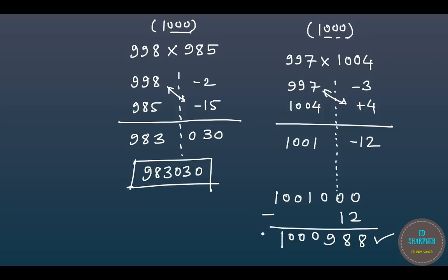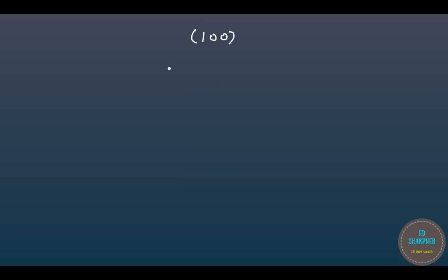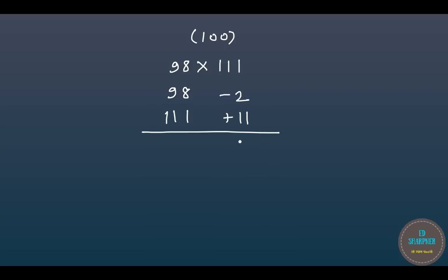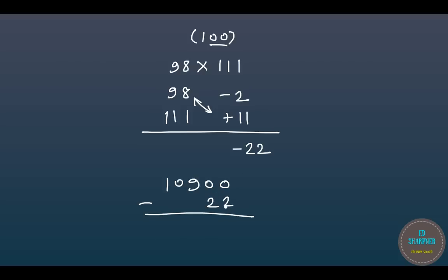Let us clarify this with another example near base 100: 98 times 111. Write 98 with minus 2 and 111 with plus 11. The right-hand side gives minus 22. Combining one diagonal pair gives 109. After 109 we put two zeros to get 10,900, and because the product was negative, we subtract 22 to get the answer of 10,878.